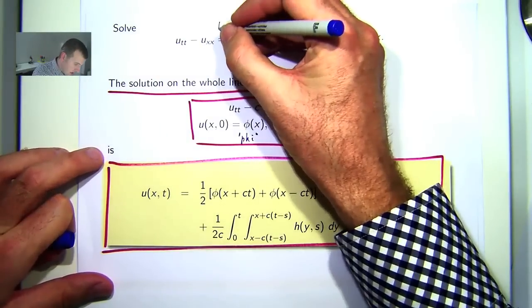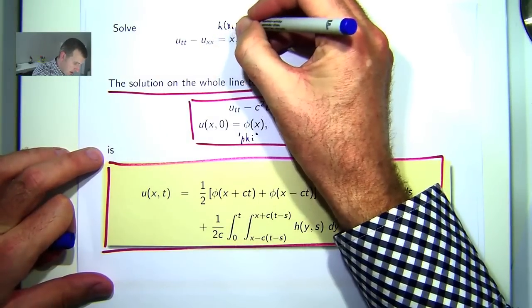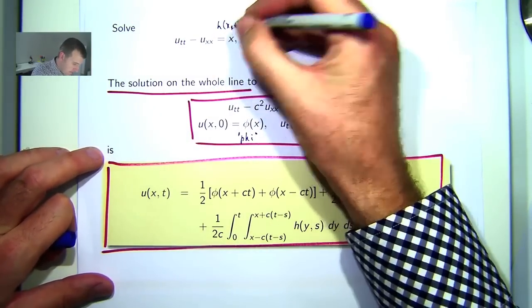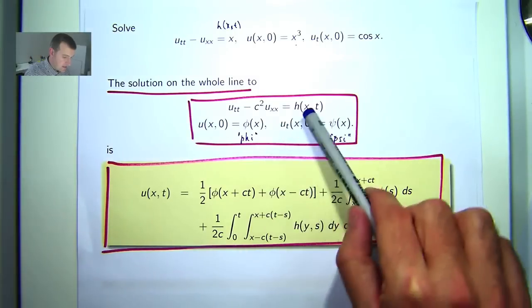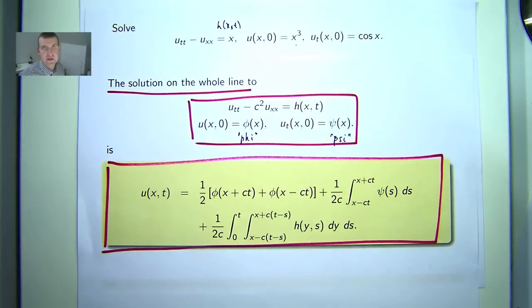So here h would be x. Now h is just a function of one variable in this case, but it could be a function of two.